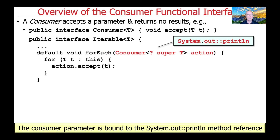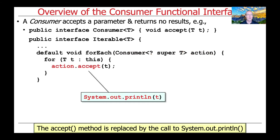In this particular case, as we saw where the call was made, we're going to be passing in the System.out.println method via a method reference. That will be what gets bound to the action parameter, which is a Consumer of the forEach method. We then use the forEach loop to iterate through every element in the iterable and call the accept method on the action, passing in parameter T — each element in turn — which effectively calls System.out.println on each element T that's part of the iterable.